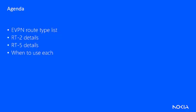First, we're going to walk through the EVPN route types and descriptions. Next, we'll go through some of the RT2 details and an example. Follow up with RT5 and an example as well. Then we'll conclude with deployment scenarios and why you would choose one route type over the other in your deployment.